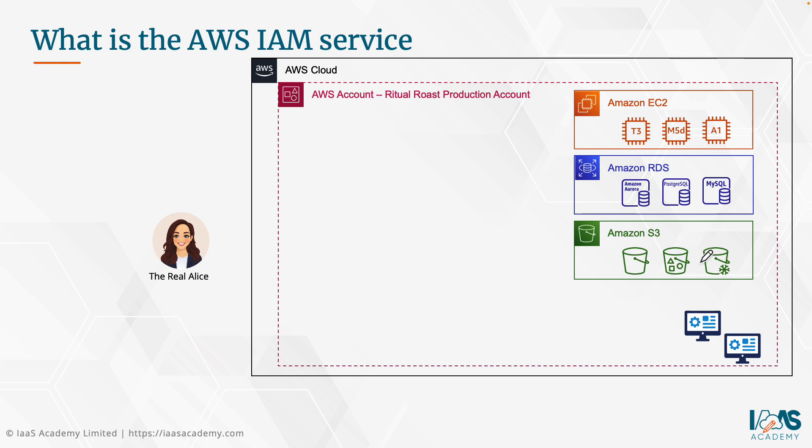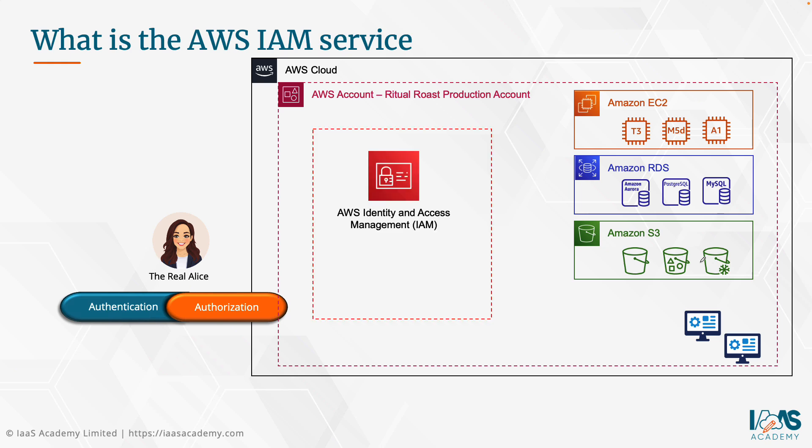We use an identity and access management solution to provide two things. One is authentication — that's where we verify identity. The other is authorization — once we've verified identity, we give the user certain permissions to do the job they need to do. On the AWS platform, the classic original service for both authentication and authorization is the AWS Identity and Access Management service, also known as IAM.